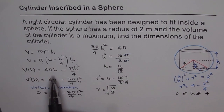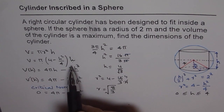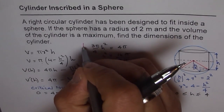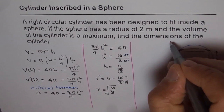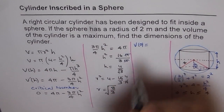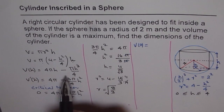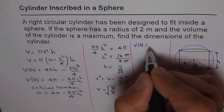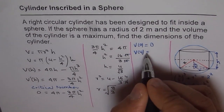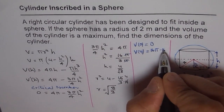We plug these values into V(h) = 4πh − πh³/4. For h = 0, the volume is 0. For h = 4, we get 16π − 16π, which is also 0.